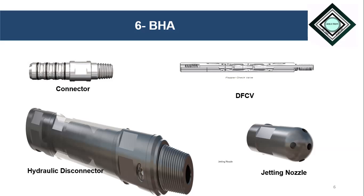The sixth and last part is the CT BHA. Depending upon the nature of the job, the bottom hole assembly can vary, but the most fundamental parts included in a coil tubing BHA are: first, the coil tubing connector, which is used to connect the bottom hole assembly to the CT pipe so that the other parts of the BHA can be connected; second, the DFCV — dual flapper check valve — which is used to provide unidirectional flow, or simply to restrict the entry of formation fluid into the coil tubing pipe.